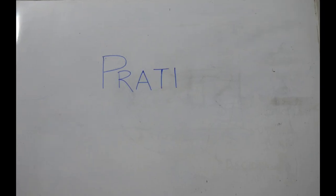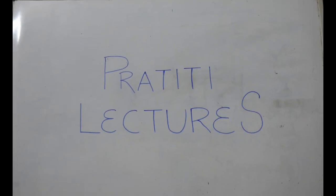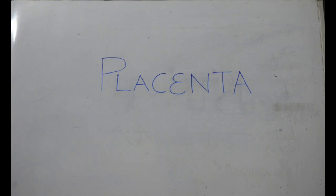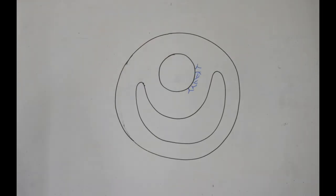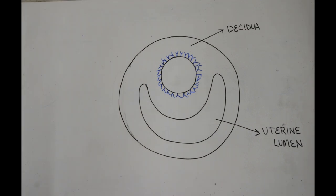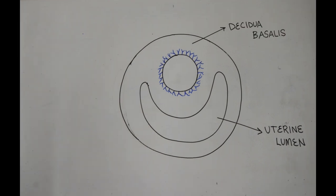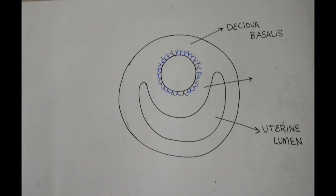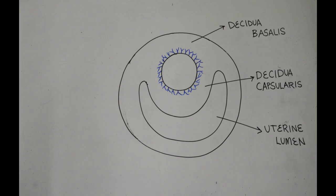Formation of placenta after the implantation of the embryo. The uterine endometrium is called the decidua. The portion of the decidua where the placenta is to be formed is called decidua basalis. The part of the decidua that separates the embryo from the uterine lumen is called decidua capsularis, while the part lining the rest of the uterine cavity...